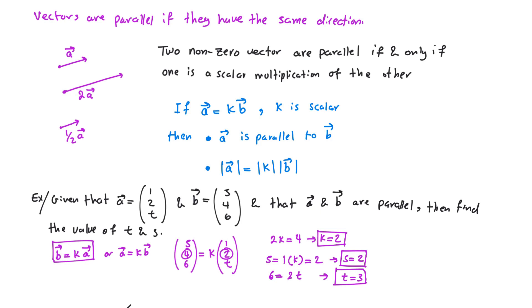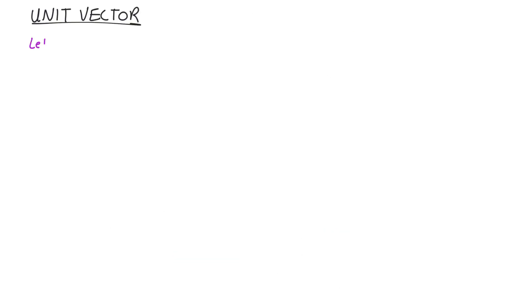Note that we could have started by writing vector a = k times vector b and still gotten the same values for s and t, but k would have been different — in this case k would be 1/2. Either form holds true and gives the same results for s and t.